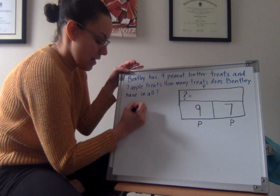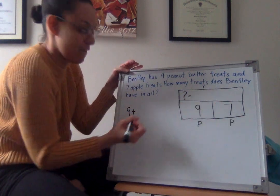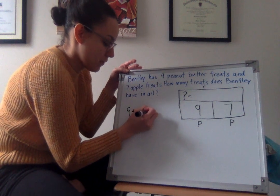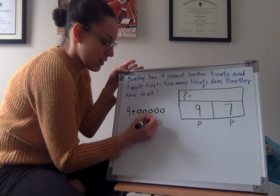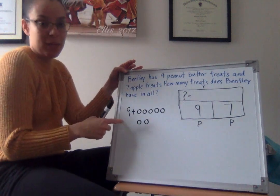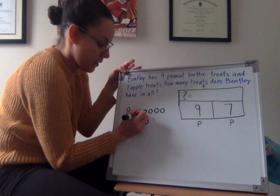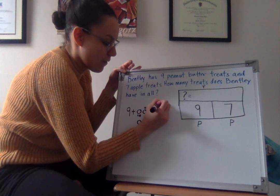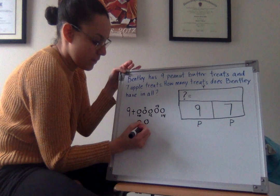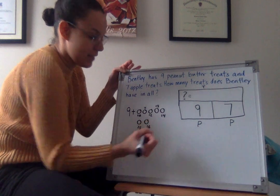Nine. I'm going to count on and add seven circles. One, two, three, four, five, six, seven. Now let me count on. Nine, 10, 11, 12, 13, 14, 15, 16.